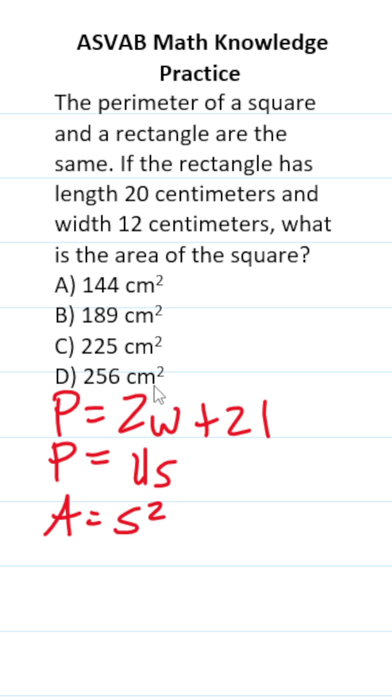We know the width and length. This is 12, this is 20. Let's do this mentally. 2 times 12 is 24, 2 times 20 is 40, 24 and 40 is 64.